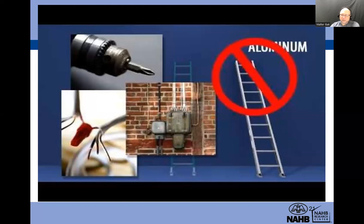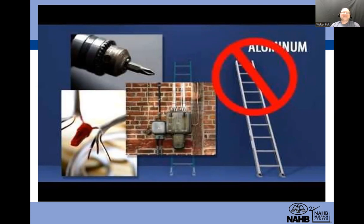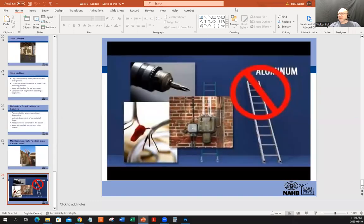That's the lecture about ladders. Next time we'll talk about the safety considerations for scaffolds. Remember the 4-to-1 pitch rule, three feet above the landing surface, three points of contact, and choose the right ladder duty rating for your weight and the task. Physical ability is also a factor when choosing a ladder. Have a safe weekend — it is Friday today. See you next time. Thank you very much.